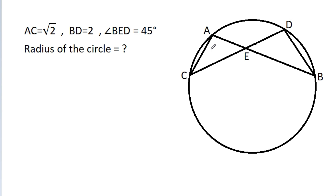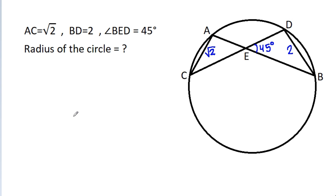In this video, we have been given that AC is square root of 2, BD is 2, and angle BED is 45 degrees. We have to find the radius of the circle.